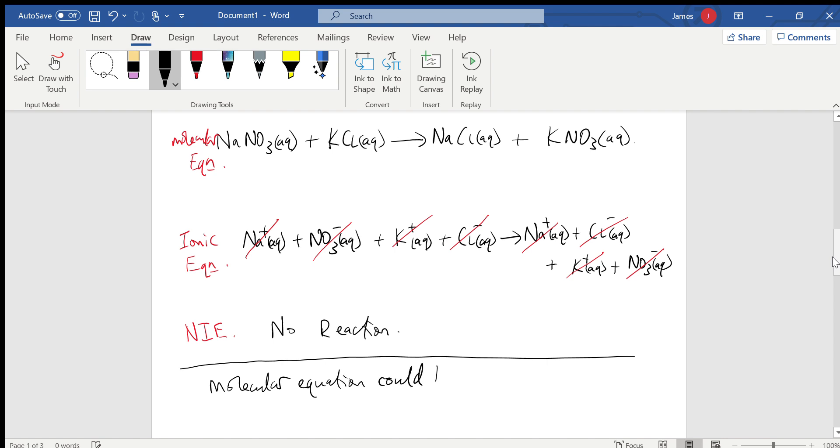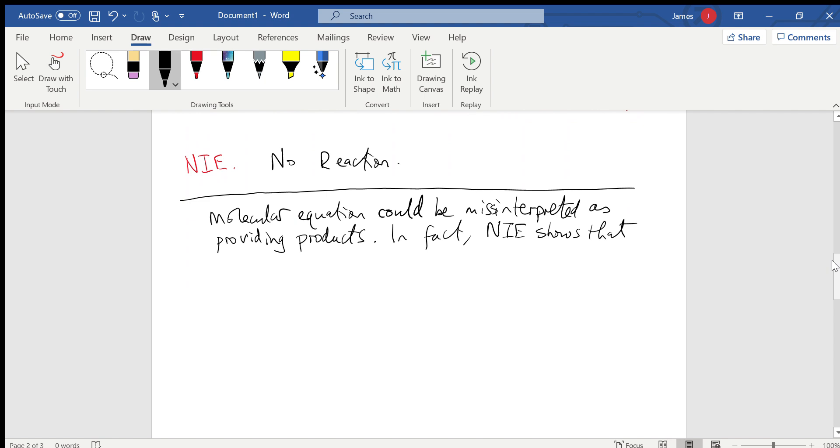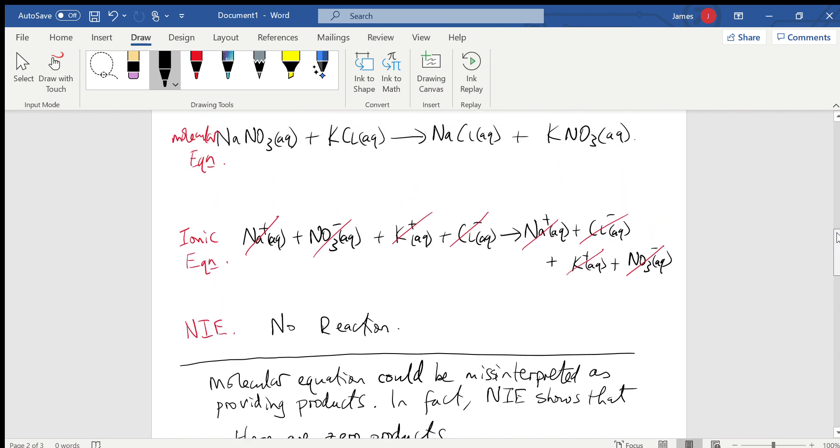The molecular equation could be misinterpreted as providing products. In fact, the net ionic equation shows that there are no products, there are zero products. So this is not a chemical reaction, this is just a mixture of stuff that has no interest in itself or anyone else.